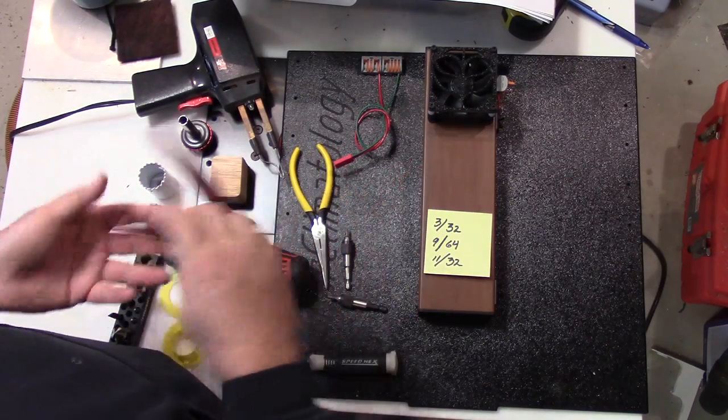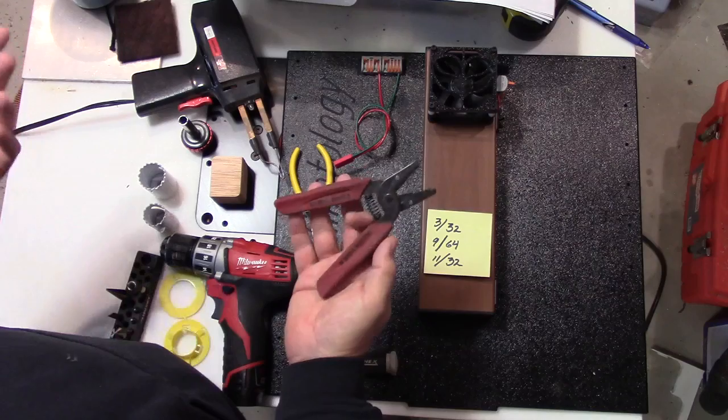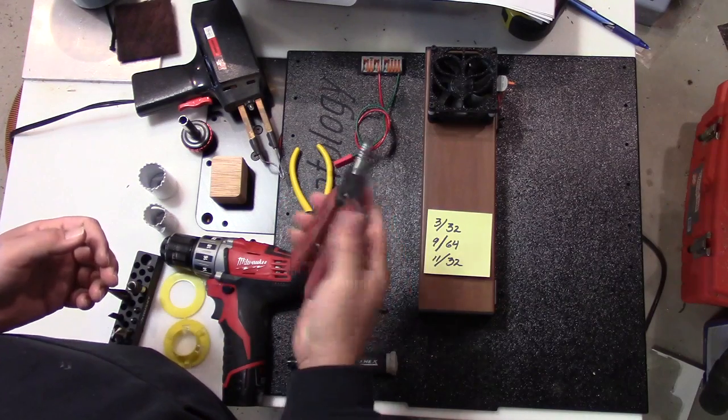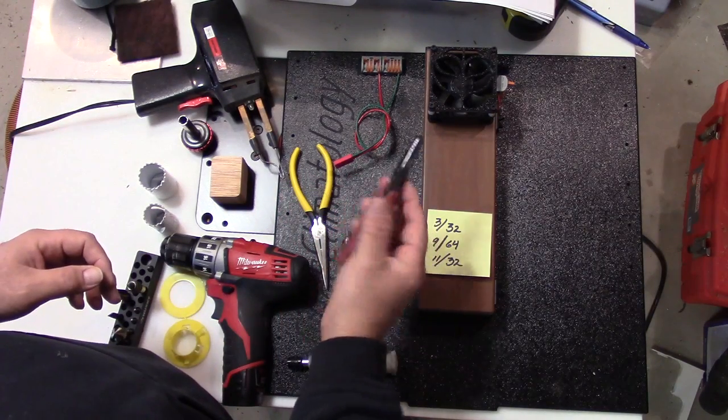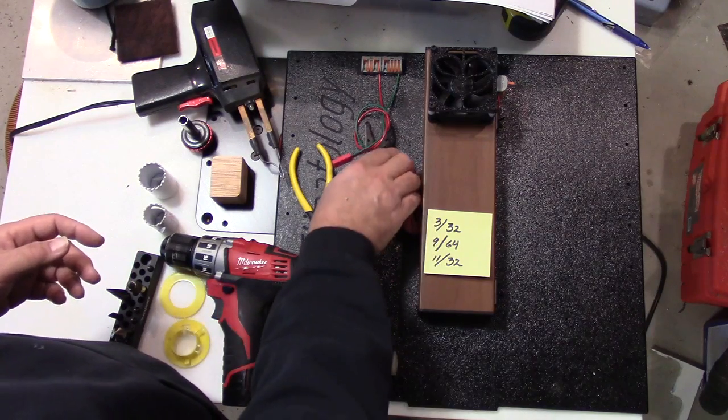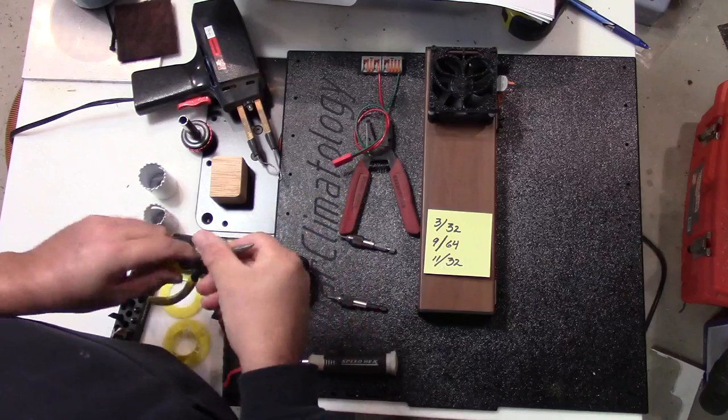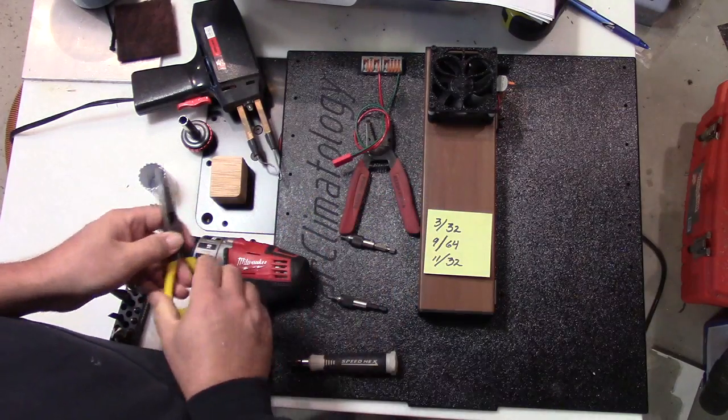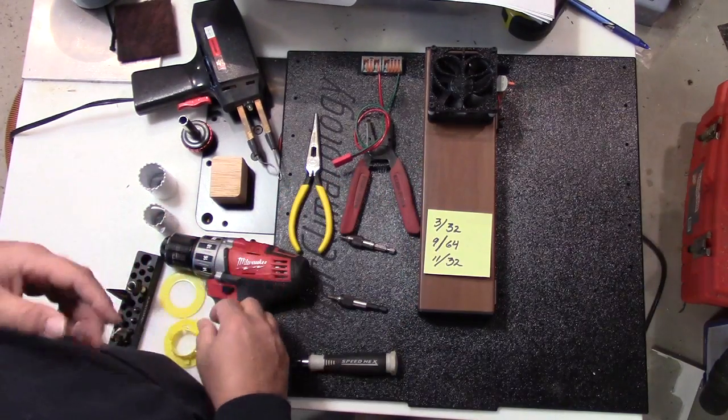I use a very simple, this is a Klein Tools wire cutter and stripper. I probably have half a dozen of them. And they're very handy. These things are available at big box stores for about $12. Sometimes you might need to reach in and grab something. I very rarely use needle nose pliers, but sometimes I do have them.